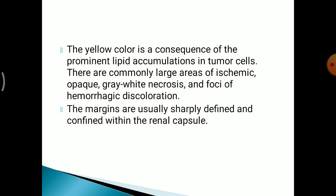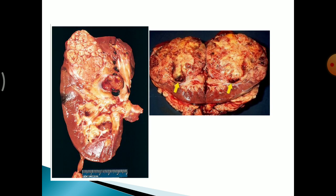The yellow colour is a consequence of prominent lipid accumulations in the tumour cells. There are areas of ischaemia, necrosis and haemorrhagic discolouration. The margins are usually sharply defined and confined within the renal capsule. This gross finding shows a well-delineated lesion distorting the renal outline with grey-yellow to grey-tan, necrotic and haemorrhagic areas.